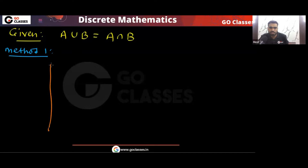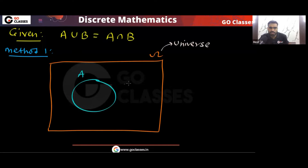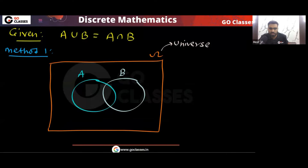So this is your universal set — let's call it Omega. In this universe, you have two sets: set A and set B. The question says that A union B is equal to A intersection B. Now, if you have two sets, there are areas: area number one, area number two, area number three, and area number four.